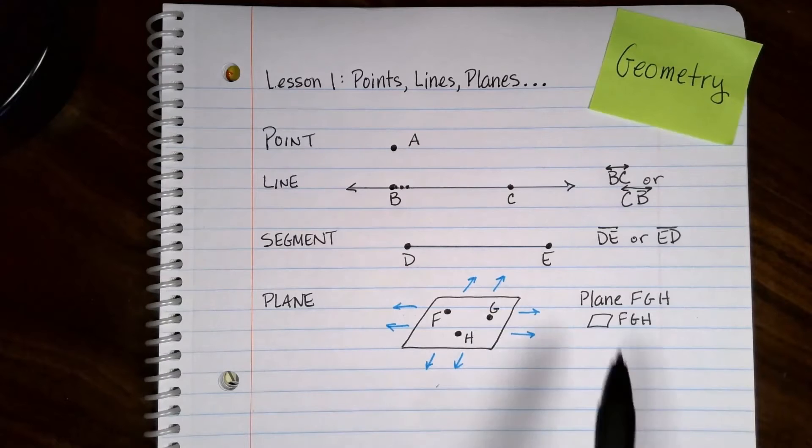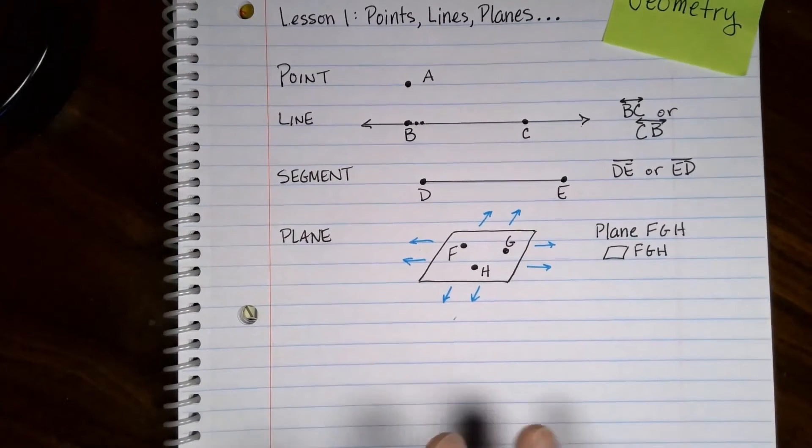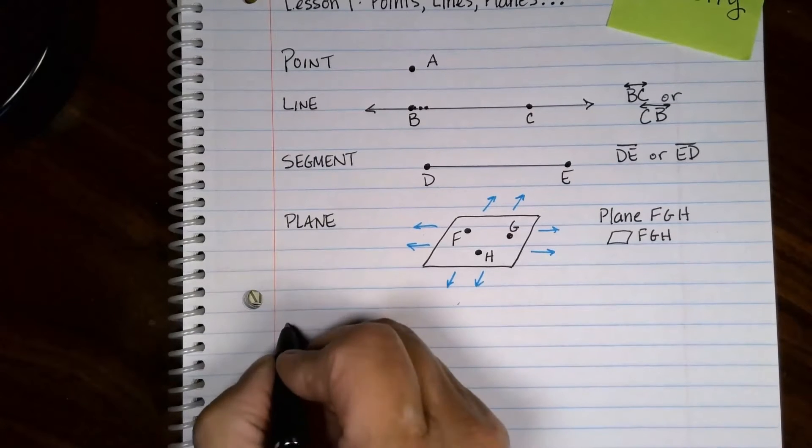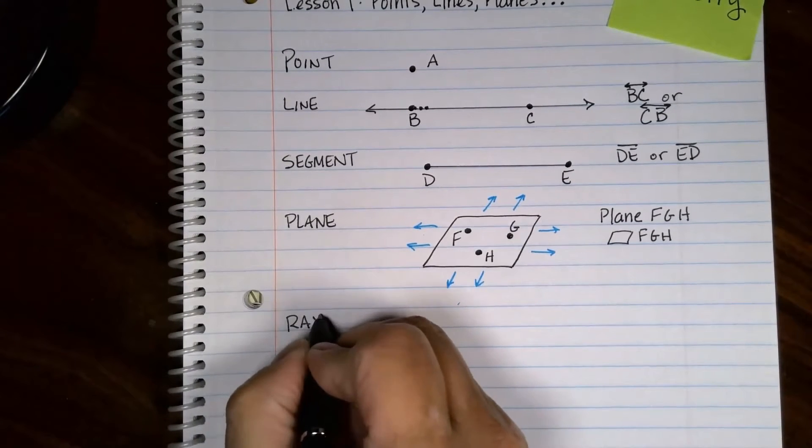Points, lines, planes. Now we're up to the dot, dot, dot part. For some reason, and I think it's because I'm a science fiction nerd, this is like my favorite one of these. It's a ray.